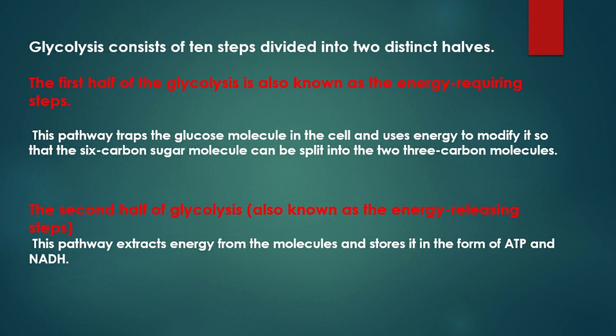Glycolysis mein 2 distinct phases hote hain aur ye 10 steps mein complete hote hain. Iska first phase, preparatory phase ya energy requiring steps hota hai. Is pathway mein glucose molecules cell mein trap kar liye jaate hain; 6 carbon-yukth glucose 2 three-carbon molecules compound mein convert ho jaata hai. Iske liye energy ki aavashyakta hoti hai, isliye is phase ko energy requiring phase kaha jaata hai. Glycolysis ka second phase energy releasing steps hai, ise payoff step bhi kaha jaata hai. Is pathway mein molecules se energy release hokar ATP aur NADH ke form mein store ho jaati hai.